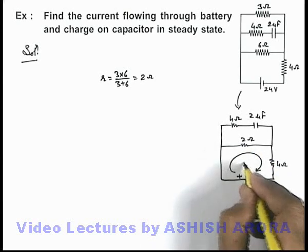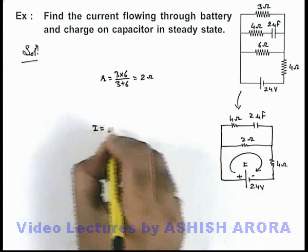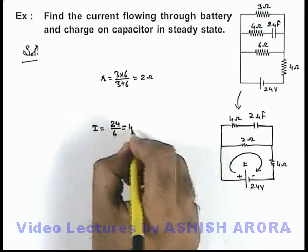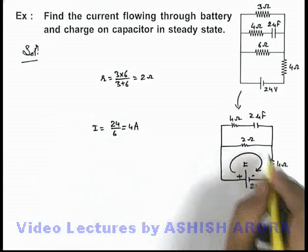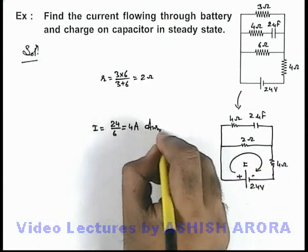So the current flowing can be directly calculated as 24 by 6. This is 4 ampere. That is the current flowing through the battery which is one answer to the problem.